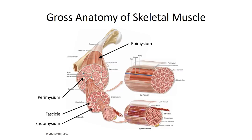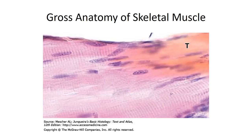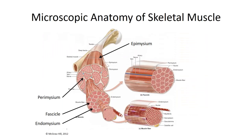This is where we find capillaries for gas and nutrient exchange and nerve endings that stimulate individual muscle fibers. At either end of the muscle belly, the three layers fuse together and transition into tendon, which anchors the muscle to the bone. Okay, connective tissue is out of the way — we can look at the individual muscle cells now.